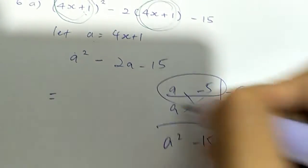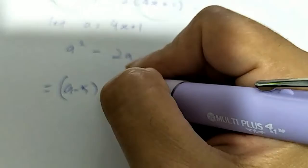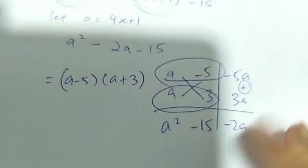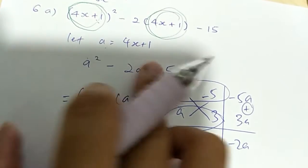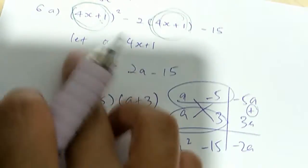So then you copy this down, copy this down. So you get a minus 5, a plus 3. Right? But the thing is, this is not all. The thing is, you have substituted this whole thing with a. So you need to replace back.